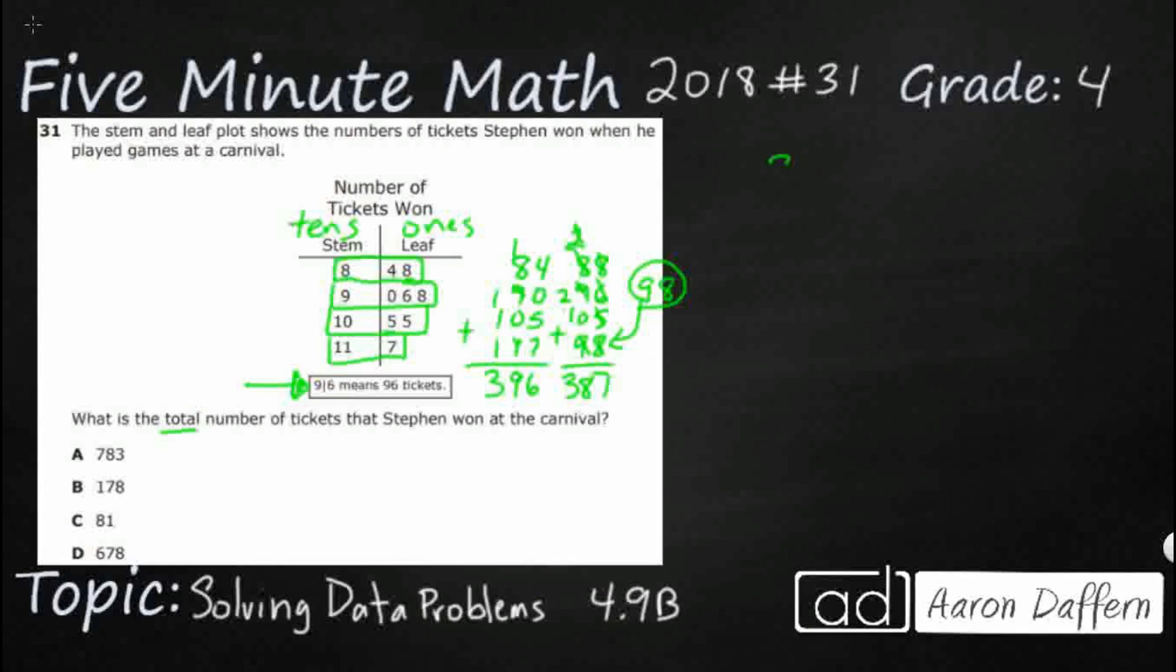So now I've got my 387, 396. Add them up. That's going to be 13. Always make a 10 if you can. 9 and 1 make 10, that's 18. 1, 2, 3, 4, 5, 6, 7. We made it. 783. So that is the total number of tickets by adding everything on this stem and leaf plot. Our answer is A.